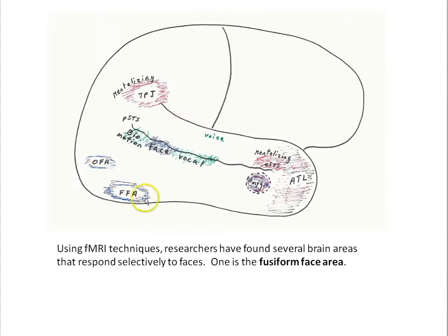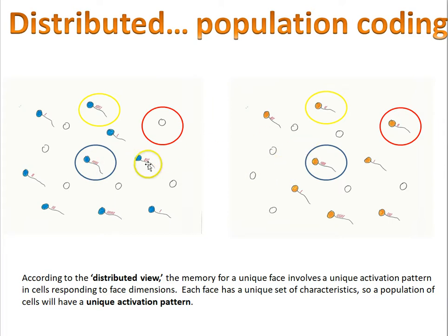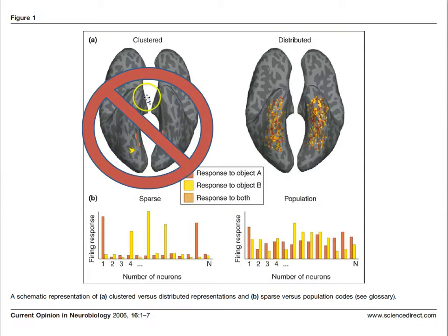We've already learned in previous lessons about the fusiform face area and how new research suggests that the face area might be using a population coding scheme to differentiate faces. It's the pattern of neural activity that distinguishes one face from another, as opposed to sparse coding.